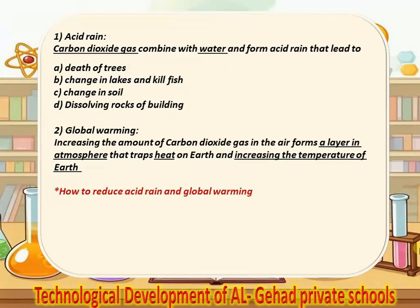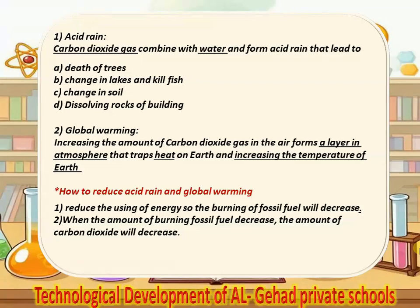Number 3, how to reduce acid rain and global warming. Number 1, reduce the use of energy so that the burning of fossil fuel will decrease. Number 2, when the amount of burning fossil fuel decreases, the amount of carbon dioxide will decrease.